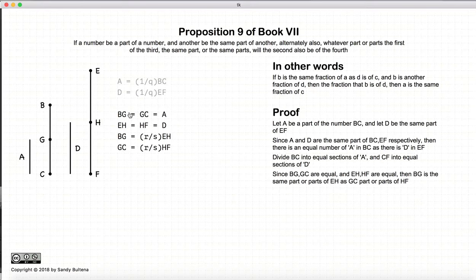Now since BG and GC are equal, and according to Proposition 4 of this book, a smaller number must either be a part or parts of the larger number. So BG must be some part or parts of EH, and likewise GC must be some part or parts of HF. Since BG and GC are equal, and EH and HF are equal, they are the same parts of, BG would be the same parts of EH as GC is of HF.